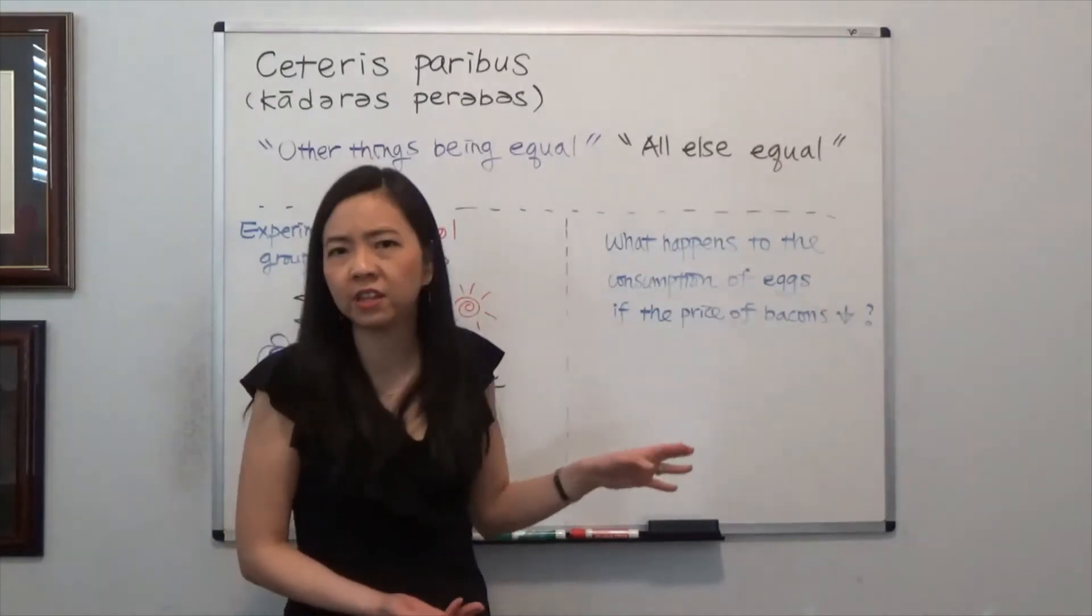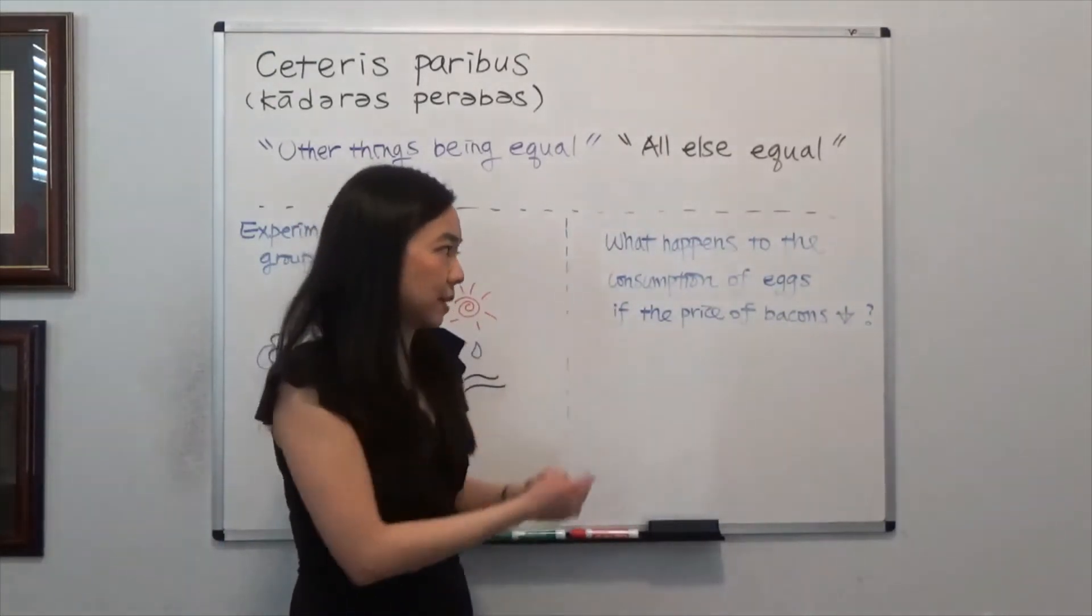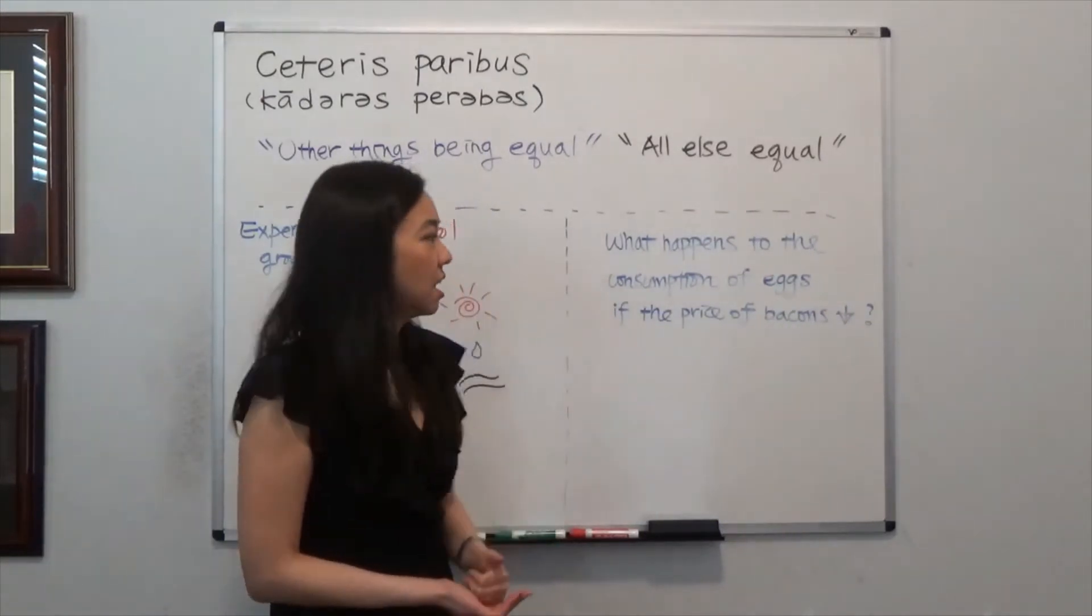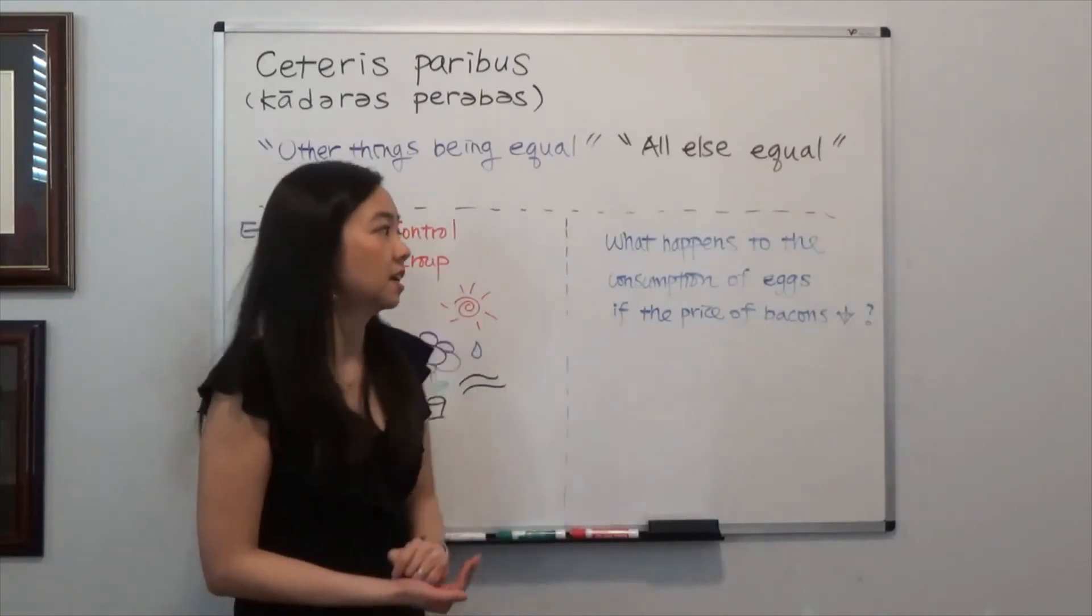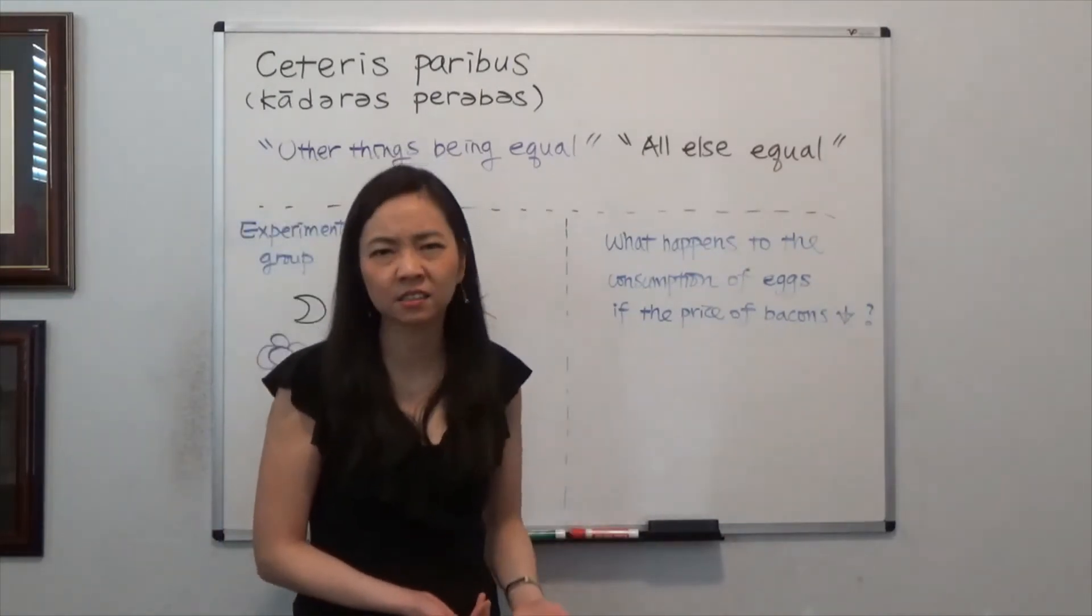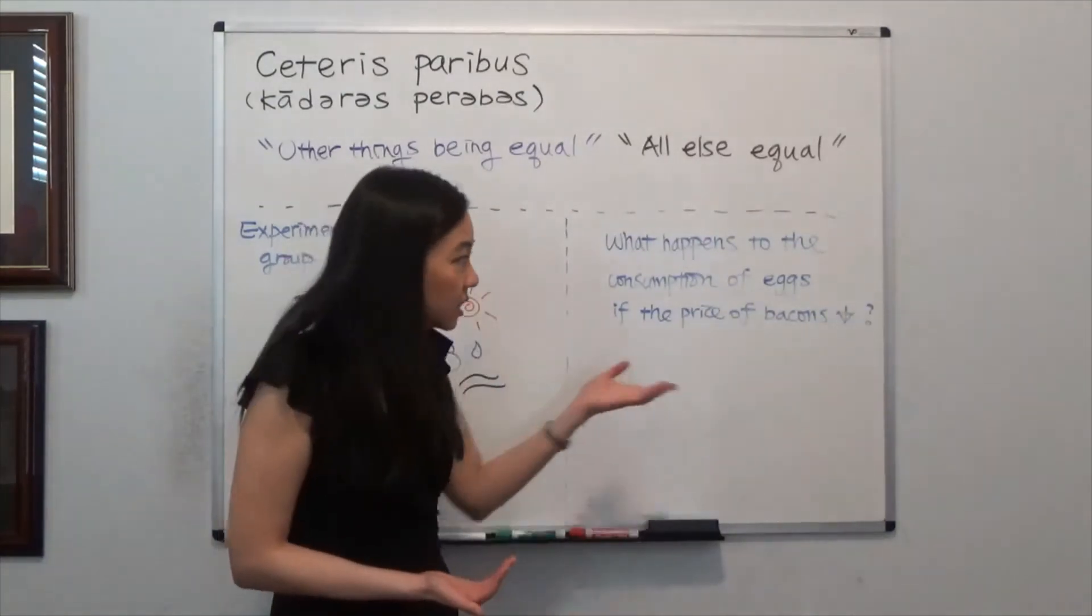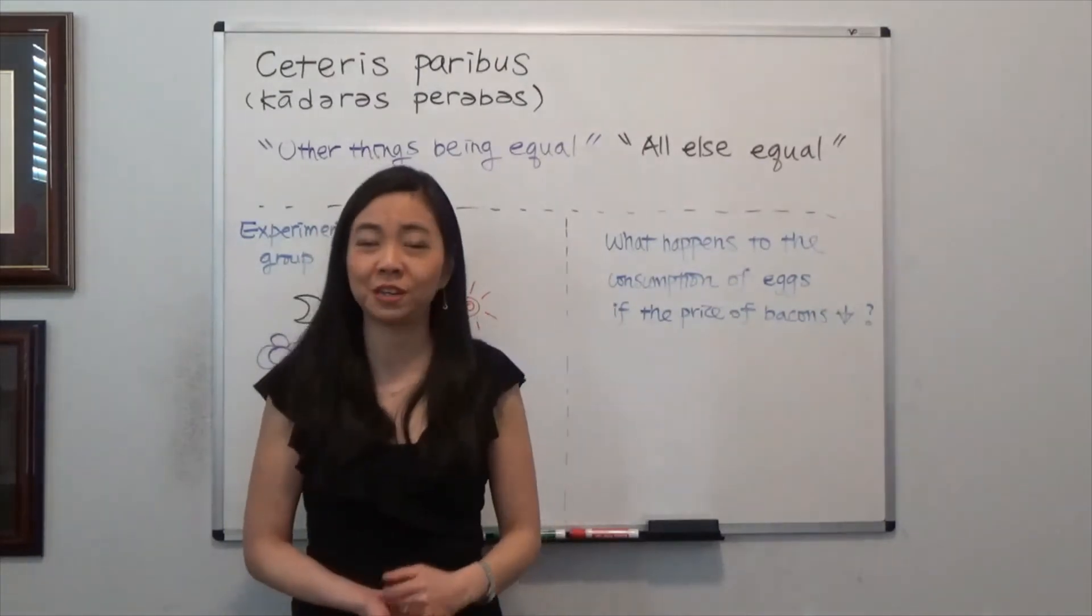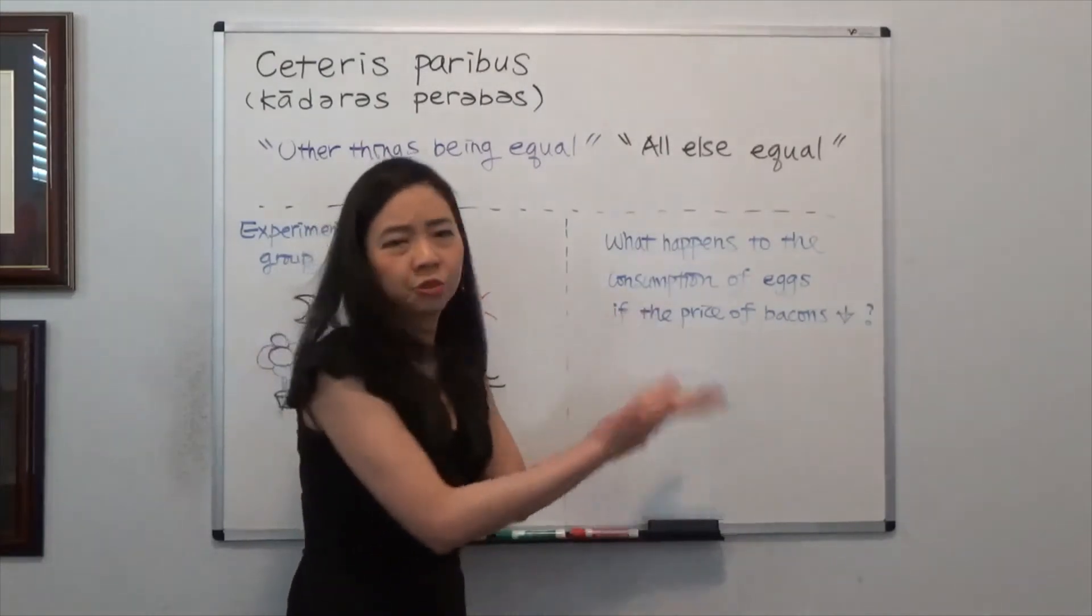Because if you change one of those, then you can't really do this research anymore. For example, if the consumer's income has increased and the price of bacon also goes down, and now you see the consumer is eating more eggs. Then you don't know why the consumer is eating more eggs. Is it because the price of bacon goes down or is it because the consumer's income has increased and has a higher purchasing power now? You don't know.